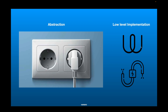Let's say behind the power socket, previously you were using a copper wire. Due to some changes, the copper wire stopped working. You call the electrician, they fix it, and the copper wire is changed to an aluminum wire. Even though there were changes in the low-level implementation, the power socket's working does not change and stays the same for you. So the high-level module is completely decoupled from the low-level module, and this is why it is in compliance with the dependency inversion principle.